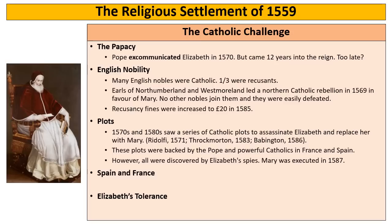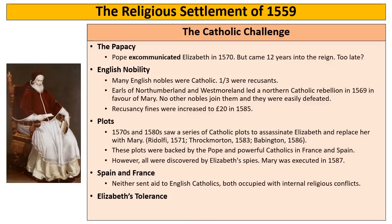Spain and France are the most powerful Catholic countries in the world and could potentially make Elizabeth's time very difficult. However, neither sends any aid to English Catholics in the first 30 years of Elizabeth's reign — they are both occupied with internal religious conflicts. France is actually in a religious civil war, with French Protestants against the French monarchy. The Spanish are dealing with the Netherlands, which are rebelling against Spanish rule. So they're both too busy to help the English Catholics.